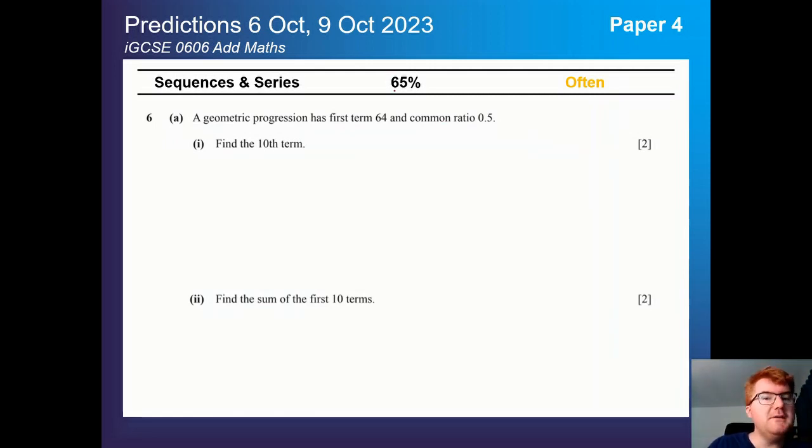Sequences and series, also popular at 65%. Similar percentage to paper one. This is a very typical question where they outline, is it geometric? Is it arithmetic? And then to work out some features from that.